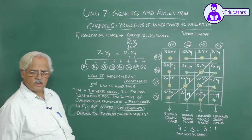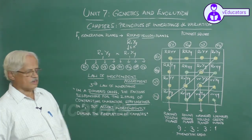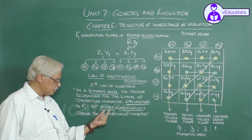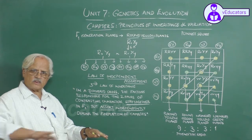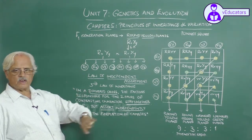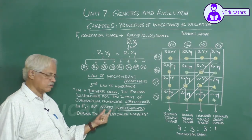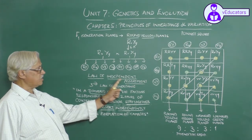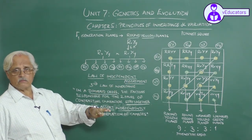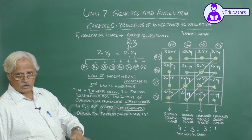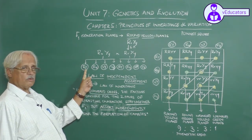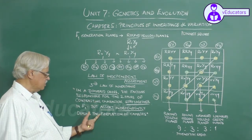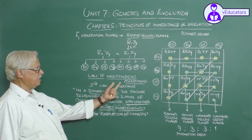That means, instead of separating into dominant and recessive factors, the genes are assorting into factors responsible for seed coat and factors responsible for cotyledon. Therefore, this is known as independent assortment — assortment irrespective of the dominant or recessive condition, assortment taking place into seed coat and cotyledon genes. So this law came to be known as the law of independent assortment.